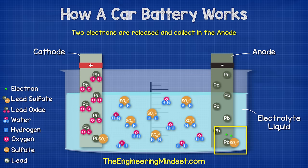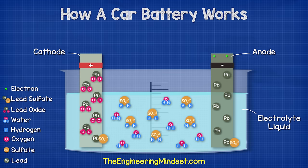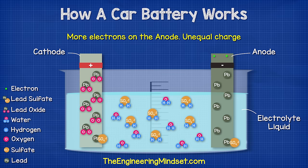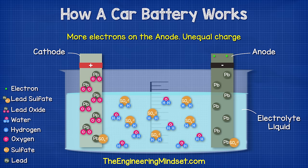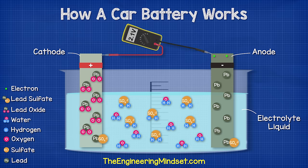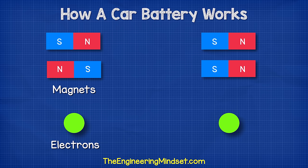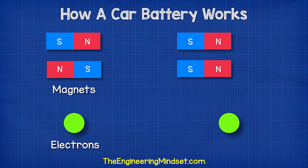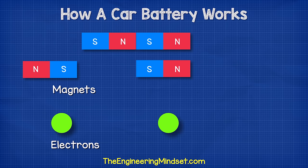During this reaction two electrons are released and collected in the negative terminal. So now we have a buildup of electrons on the negative terminal. As electrons are negatively charged, this means we have a difference in charge across the two terminals, which we can measure with a voltmeter or a multimeter.